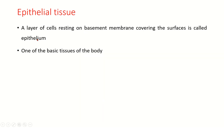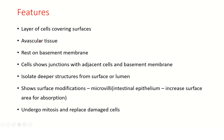Epithelial tissue, as defined earlier, is a layer of cells resting on a basement membrane covering the surfaces — one of the basic tissues of the body. Features: it is a layer of cells which covers surfaces; it rests on a basement membrane; cells show junctions with adjacent cells and the basement membrane; it isolates deeper structures from the surface or from the lumen, especially in the GIT and urinary tract. It also shows surface modifications like microvilli — for example, intestinal epithelium — which increases the surface area for absorption. It undergoes mitosis to replace damaged cells.